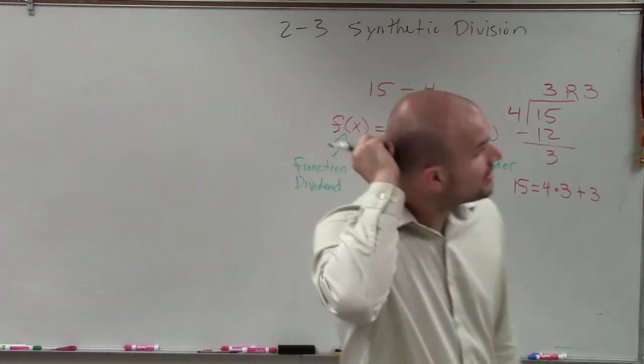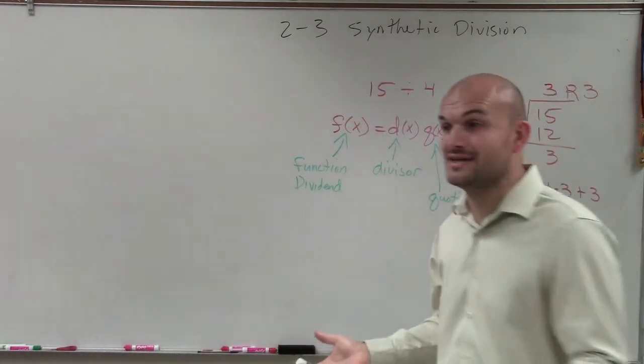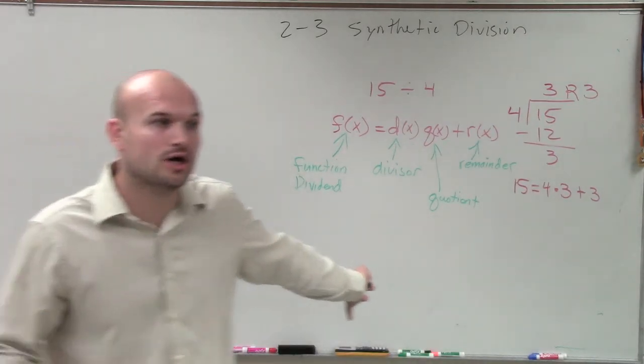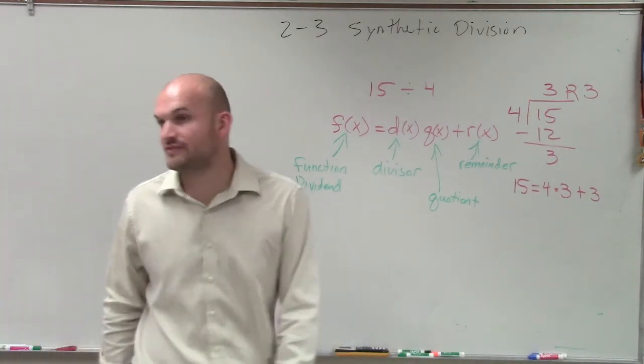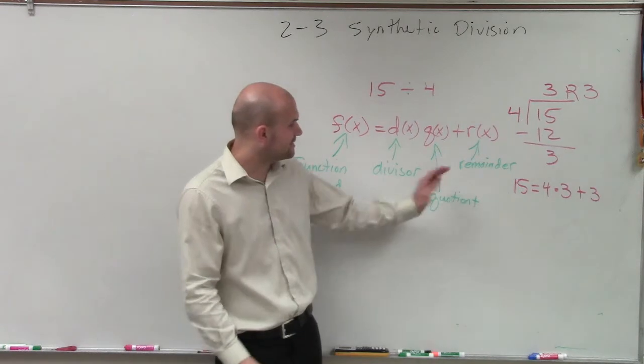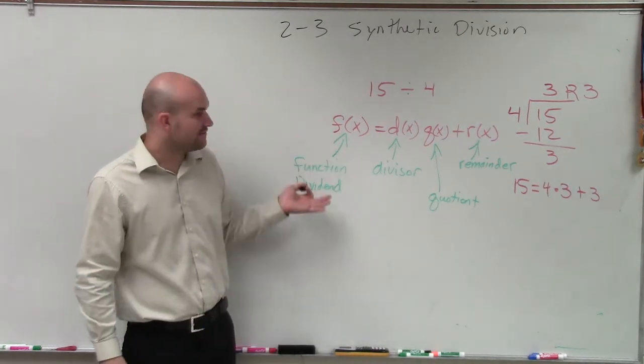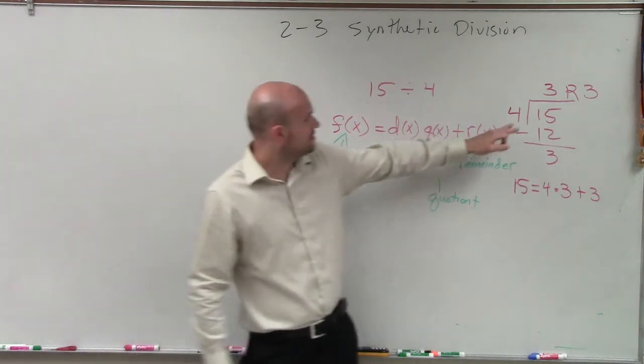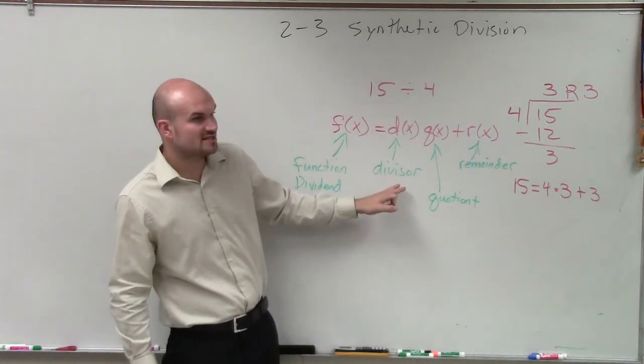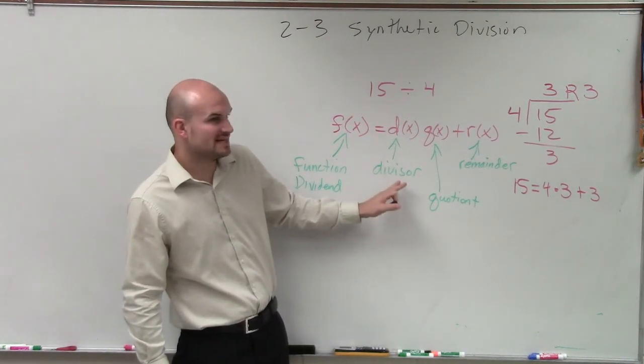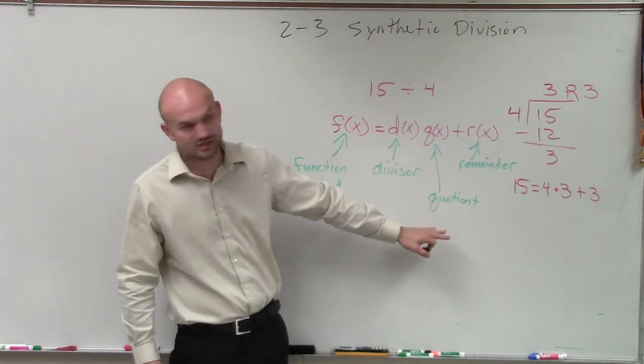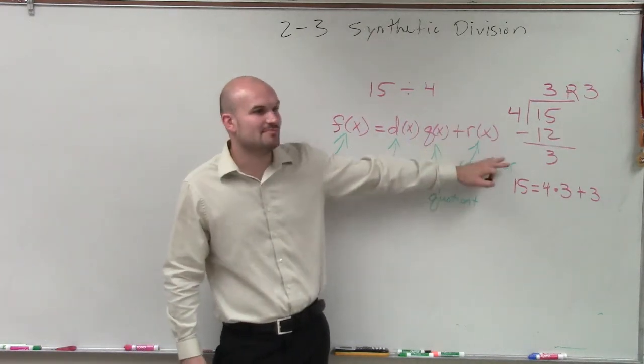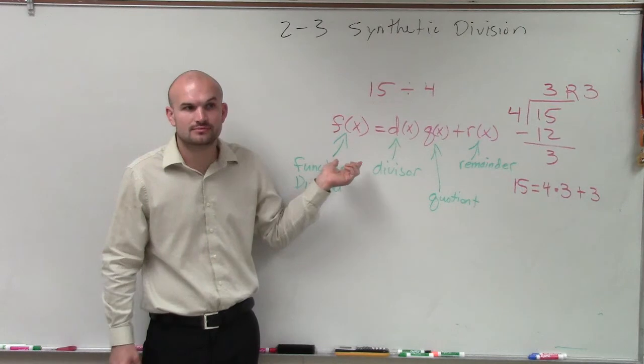All right. So a lot of times in a problem, I'm going to expect you to rewrite it in what we call our division algorithm. And what this states is if I have a function and I'm dividing it by its divisor, if I multiply that divisor by its quotient, which is the answer, and then add the remainder, I will have that function.